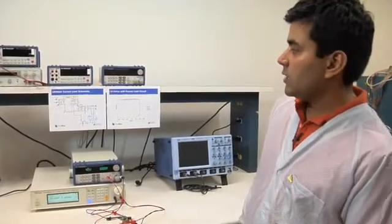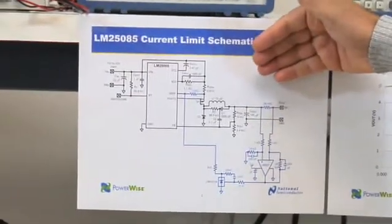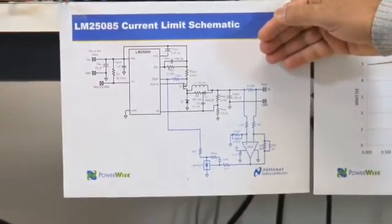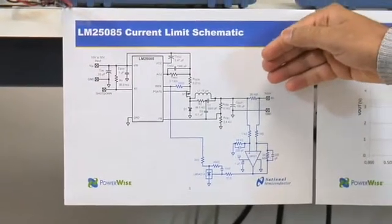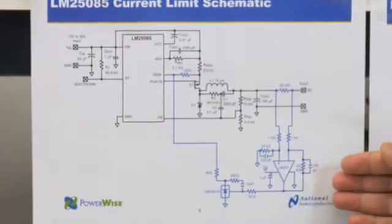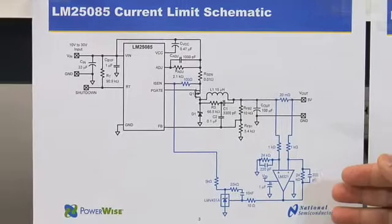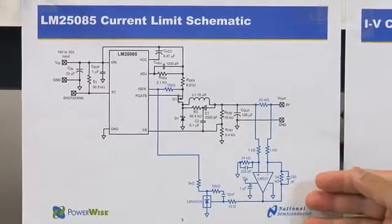As you can see in this schematic, the parts in black are the LM25085 evaluation board components, and the parts shown in blue are the extra elements that have been added to achieve a more accurate current limit.